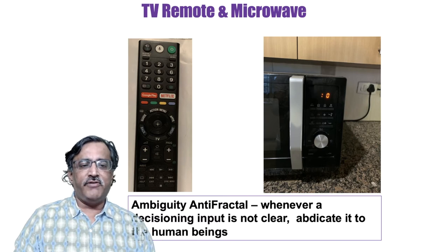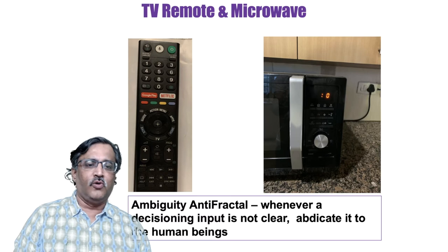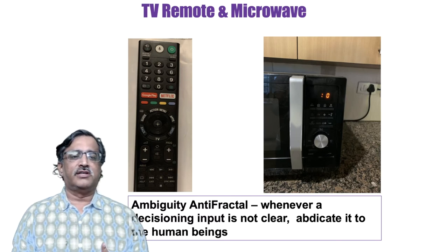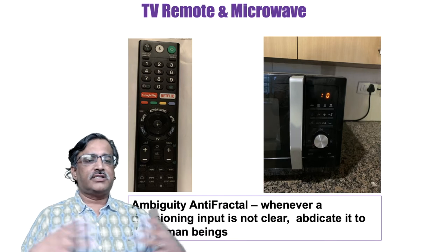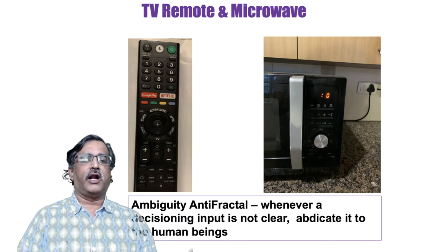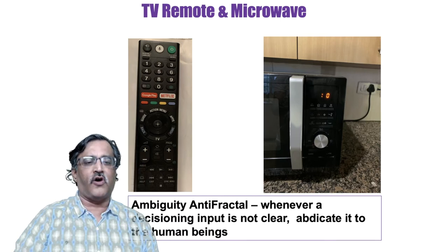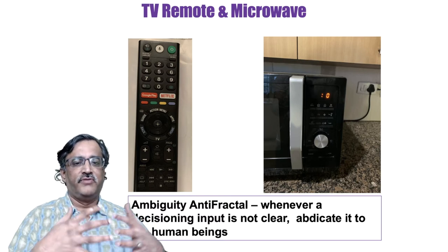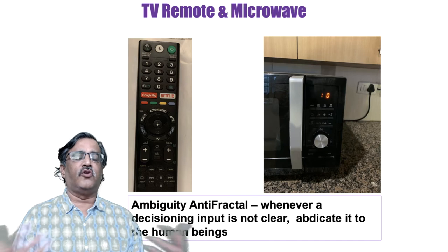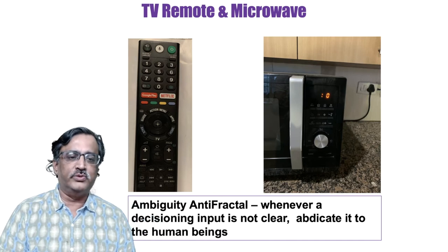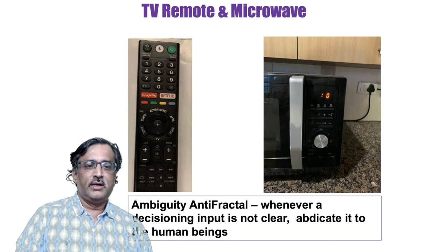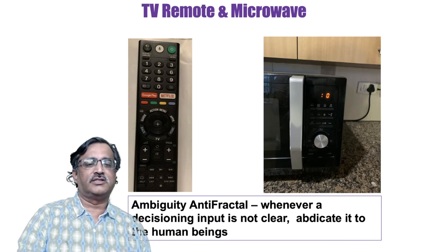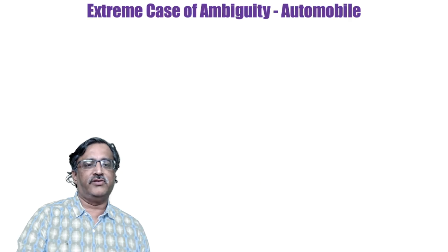So in the television remote, I could be playing Netflix, going to Google Play, changing the channel, or forwarding and reversing a video. Since the designers couldn't predict what I was going to do, they provisioned for all those options. Same with the microwave, which made the interface so complicated that it is hard to use. You can see that this is quite a big problem across many industries, not just IT systems.